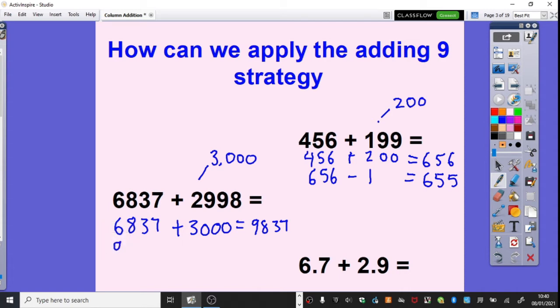we've obviously added on two too many. So we take our 9,837 and we need to subtract two ones, which gives us the answer of 9,835.